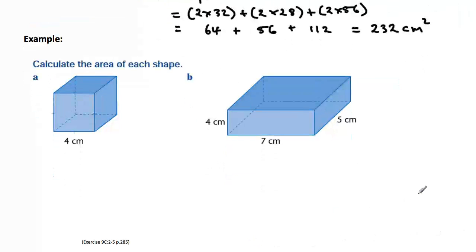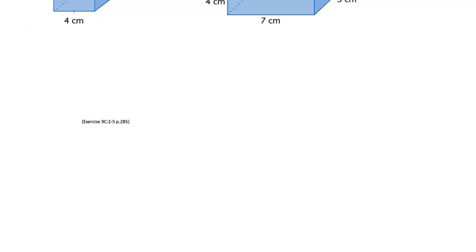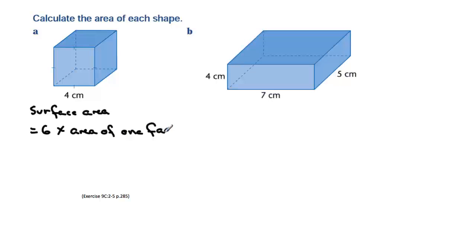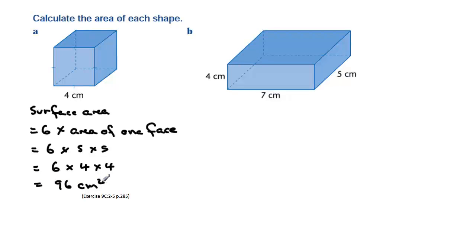Let's look at a couple more examples. We're going to calculate the area of these shapes. This one is a cube, so we can simplify this considerably. The surface area is equal to six times the area of one face, since there are six sides and they're all the same. The area of one face is side times side, so substituting in we get six times four by four centimetres, which gives us a total of 96 centimetres squared. You don't have to work out the areas one after the other, as long as you make sure you cover all the areas.